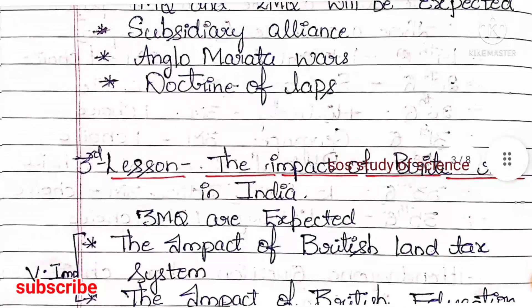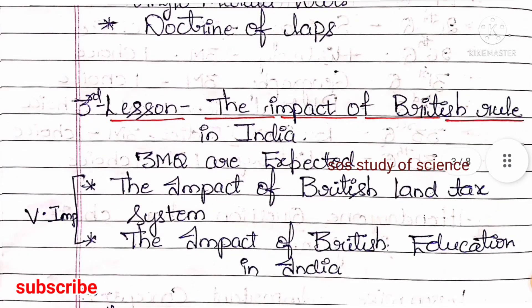Lesson 3 of History is the Impact of British Rule in India. Here 3-mark questions are expected — this is a definite question. The two very important topics are: the impact of the British land tax system, and the impact of British education in India. They can ask any one of these topics.